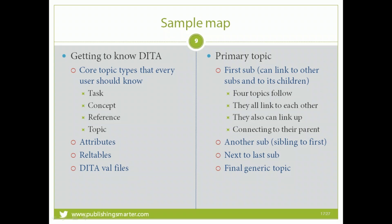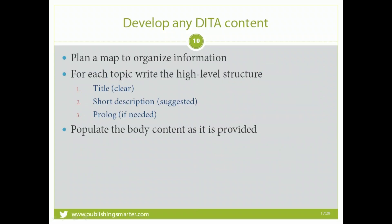The core topic types subtopic links to its four children: task, concept, reference, and topic. Those in turn can link to each other and back up to core topic types. The attributes, rel table, and DITA val topics are siblings to core topic types, and those four link to each other as well. There's planning and brainstorming involved in organizing this information — that's what the map has done.